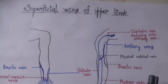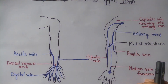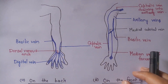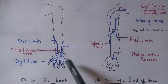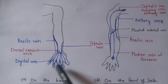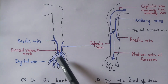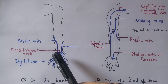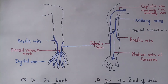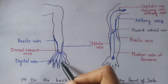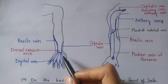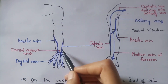First, on the back of the hand, there are the digital veins. These form the dorsal venous arch, which receives afferents from the digital veins.